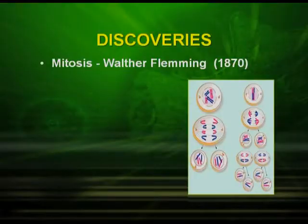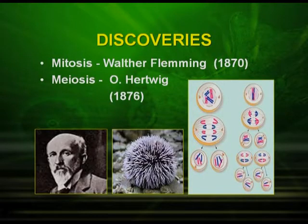To answer this question, let us go back to the discovery of cell division — mitosis and meiosis. Mitosis was discovered by Walther Flemming in 1870, and meiosis was discovered by O. Hertwig in 1876 in sea urchin. At that same time, in 1900, Mendelian inheritance was rediscovered, and people were wondering how we could relate chromosomes with genes.